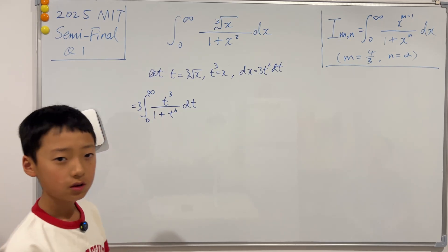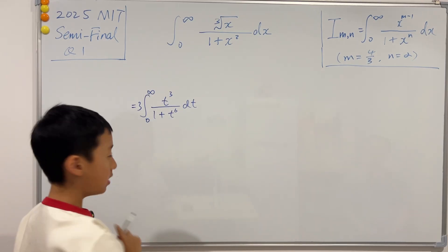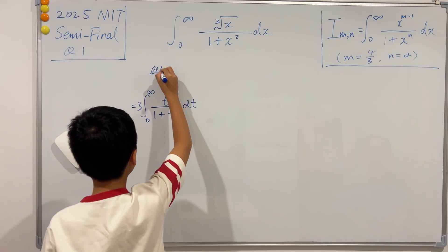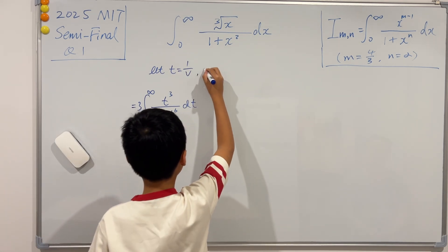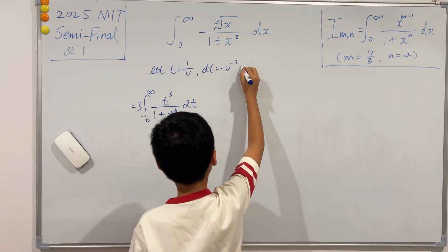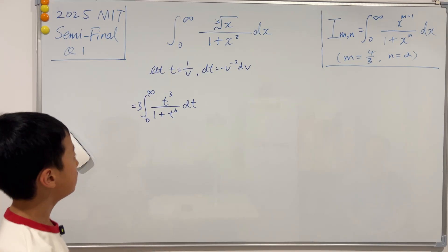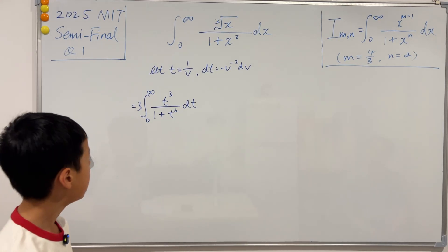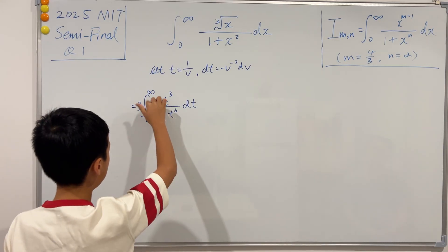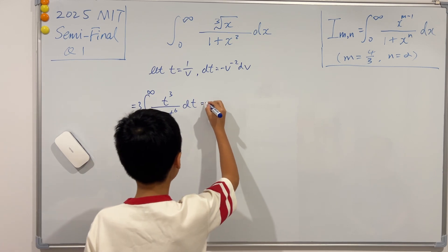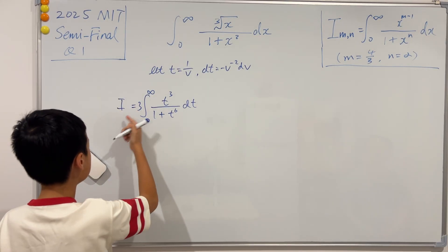I'm going to take the 3 outside and put the t² up top. Now, what should we do? I'm going to do a very unique substitution — I'm going to let t = 1/v. From here we see that dt = −v⁻² dv. I'm going to define I to be this integral before proceeding.